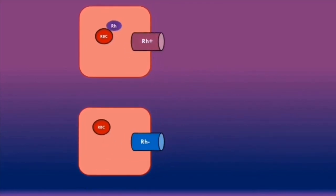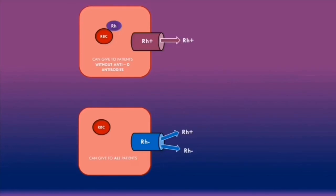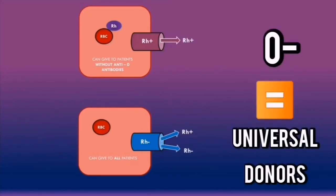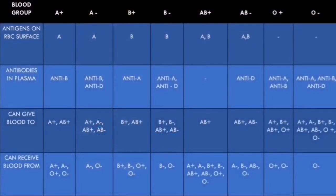To summarize rhesus compatibility in reverse: rhesus positive blood can only be given to patients without any anti-D antibodies, so this includes rhesus positive patients. Rhesus negative blood can be given to all patients, including both rhesus positive and rhesus negative. This is why O-negative patients are considered universal donors — they can donate blood to all ABO blood groups and all rhesus blood groups. Key points: O-negative patients are universal red blood cell donors, and AB-positive patients are universal red blood cell recipients.